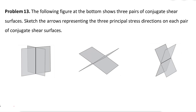In problem 13 we have three sets of conjugate fractures. Along either of these fractures there may be no displacement, in which case we call it a joint, or displacement can be developed along one of these planes as a fault. Most of the time these conjugate fractures can be seen together when there is no displacement along them.